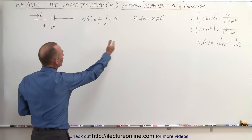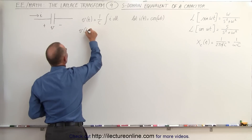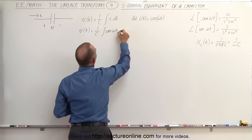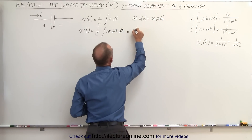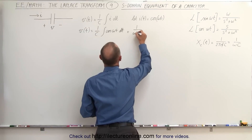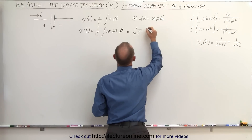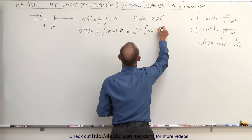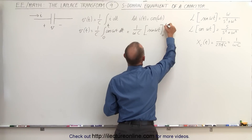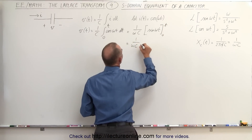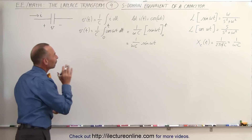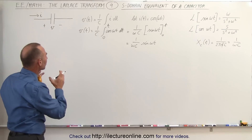So let's find the voltage: plug in the cosine of omega t. The voltage is equal to 1 over C times the integral of the cosine of omega t dt. The derivative of the sine is the cosine, so the integral of the cosine is the positive sine. We get 1 over omega times C times the sine of omega t. Integrating from 0 to t, when we plug in 0 we get 0, when we plug in t we get t, so the voltage across the capacitor in the time domain is 1 over omega C times the sine of omega t.